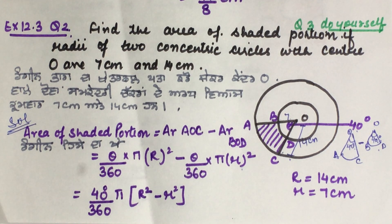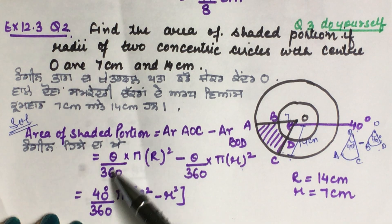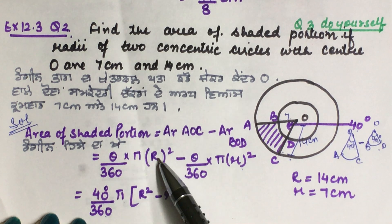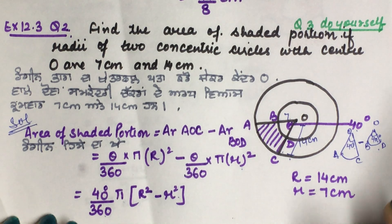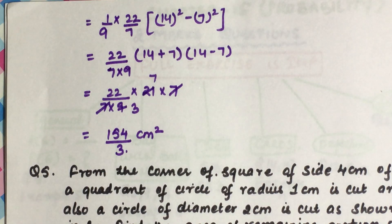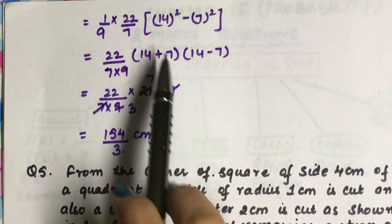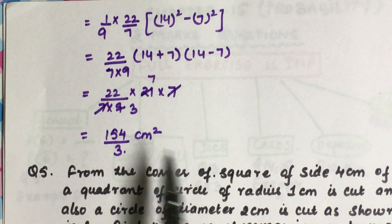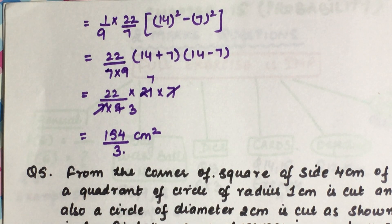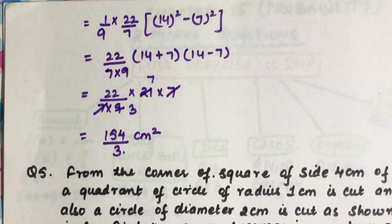It is important to write the formula first — for a one-mark or two-mark question, writing the formula correctly earns you marks. Using the sector formula: θ/360 × π × (R² − r²). Taking π common, R = 14, r = 7. Applying the difference of squares formula (a+b)(a−b): substitute the values and calculate. The answer is 154/3 cm². Clear.